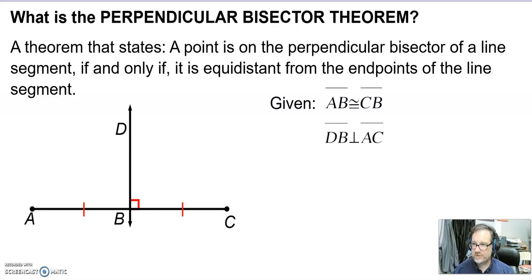The perpendicular bisector theorem states: a point is on the perpendicular bisector of a line segment if and only if it is equidistant, the same distance, from the endpoints of that line segment.